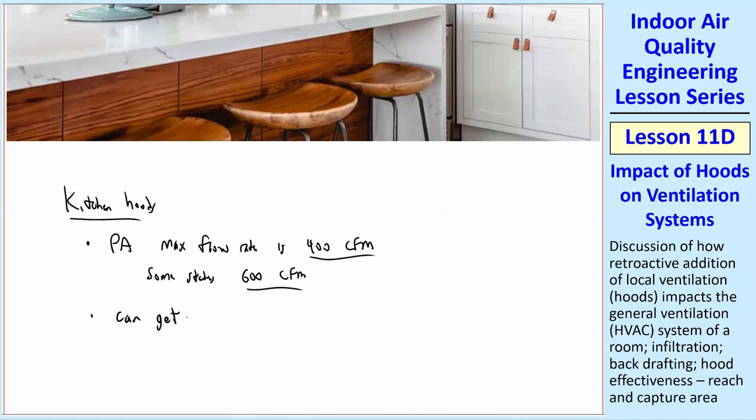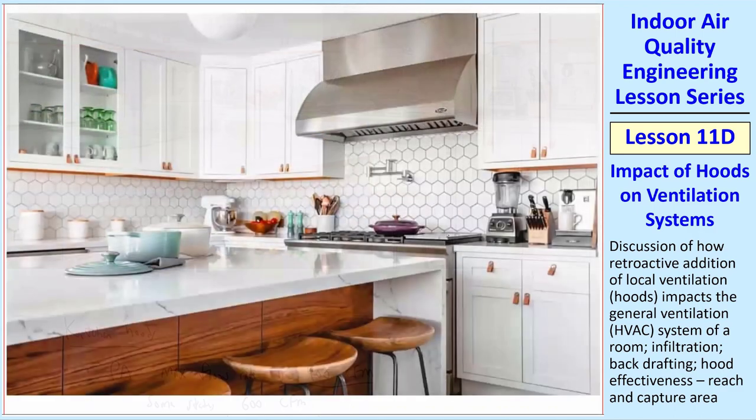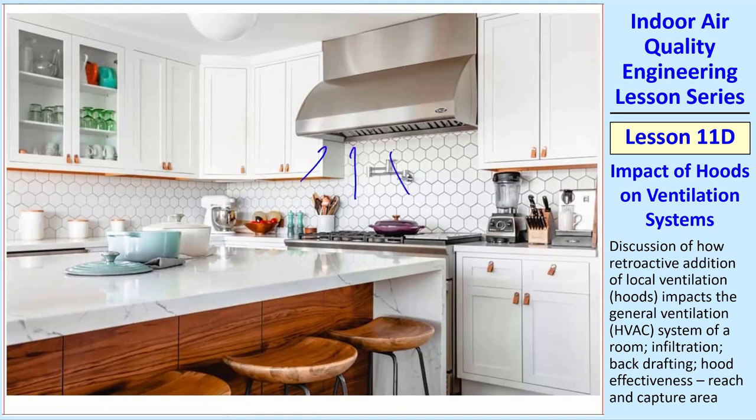One of the big problems in a house, and this can be really significant, is you can get what they call back drafting of furnaces or fireplaces. Imagine you put this big mama of a range hood in there and it's just sucking all this air out of the room. Where's it coming from? It's coming from somewhere. You'll increase infiltration and put your whole house basically at a negative pressure.